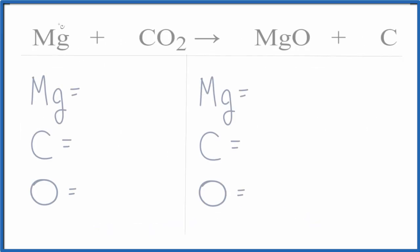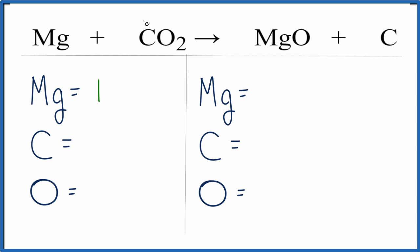On the reactant side, we have one magnesium, one carbon, and two oxygen atoms. On the product side, we have one magnesium, one carbon, and one oxygen.